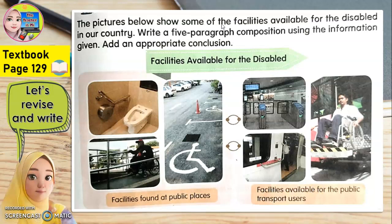The pictures below show some of the facilities available for the disabled in our country. Write a 5-paragraph composition using the information given. Add an appropriate conclusion. Gambar-gambar di bawah ini menunjukkan kemudahan yang disediakan untuk orang-orang kurang upaya di negara kita. Tuliskan karangan 5 perenggan menggunakan informasi yang diberi. Tambahkan conclusion penutup yang sesuai.